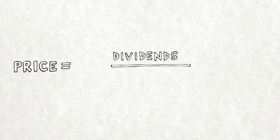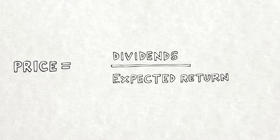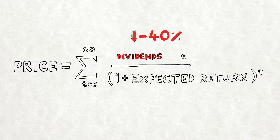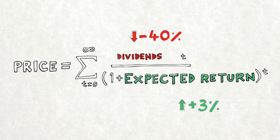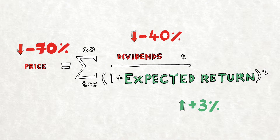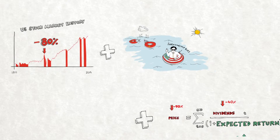The present value of an equity investment depends on two things: the expected cash flow stream — think dividends — and the expected rate of return used for present valuing those cash flows. Since equity cash flows go far out into the future, small changes in cash flow or expected return have a big impact on prices. For instance, if companies suffer earnings declines and cut their dividends by 40% in the long term, and at the same time investors demand a 3% higher expected return, stock prices would fall by 70%.